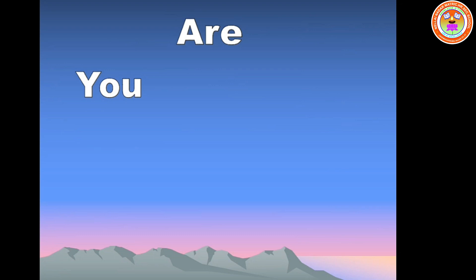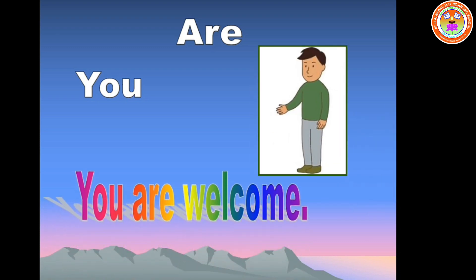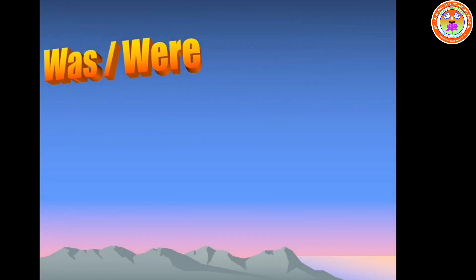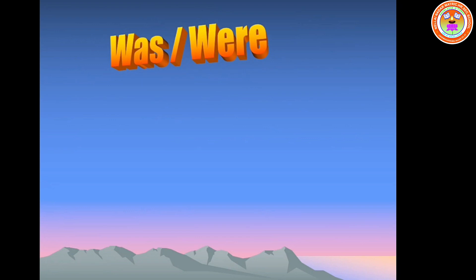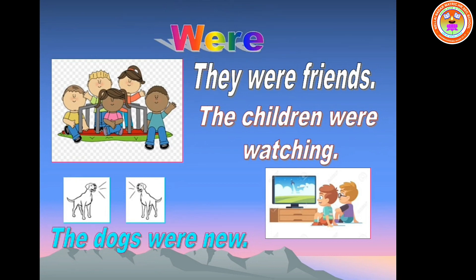Note: even though the pronoun you is used for singular and plural subjects, we have to use the auxiliary verb are after the pronoun you. Example: you are welcome. Was and were are used to indicate simple past and past continuous tense. Was is used with singular subject or singular pronoun. Example: he was busy. The dog was new. The child was crying. Were is used with plural subject or plural pronoun. Example: they were friends. The dogs were new. The children were watching.